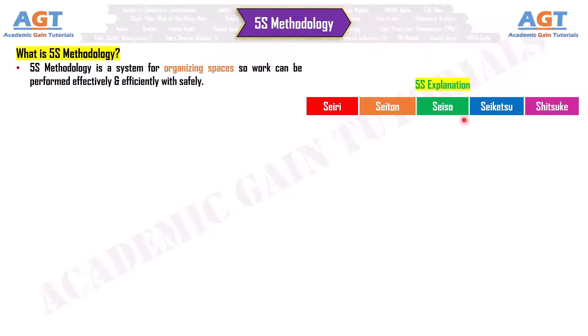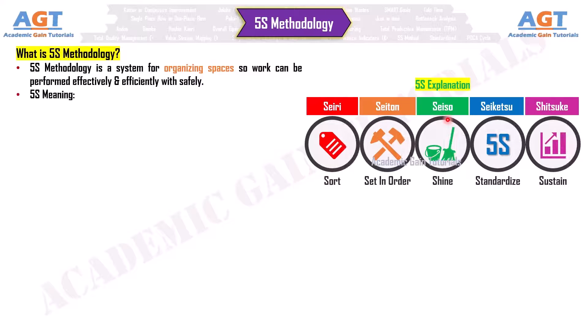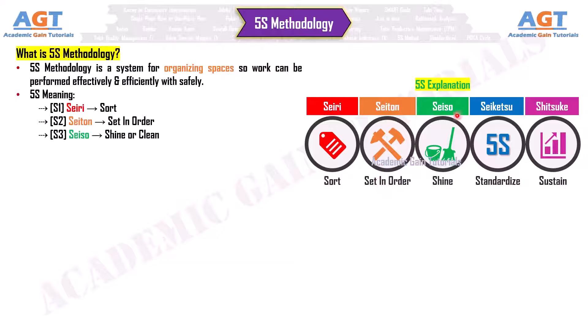5S Meaning: S1 stands for Seiri, meaning to sort. S2 stands for Seiton, meaning to set in order. S3 stands for Seiso, meaning to shine or clean.